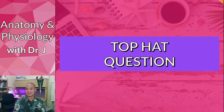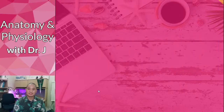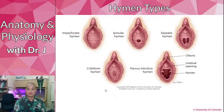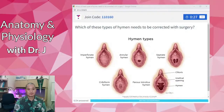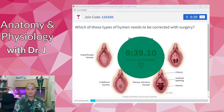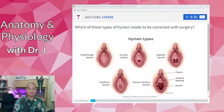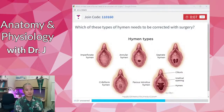Now here's a top hat question about the hymen. Hymens don't all have the same shape — there are different types. Which type of hymen needs to be corrected with surgery? One of these hymen examples is actually pathological and needs surgical correction.